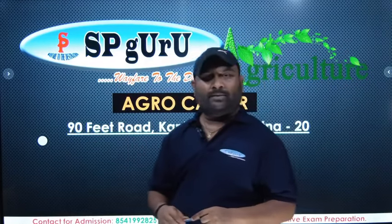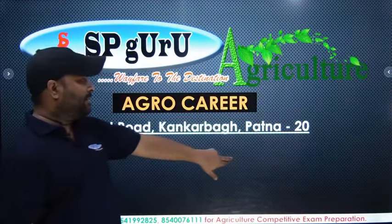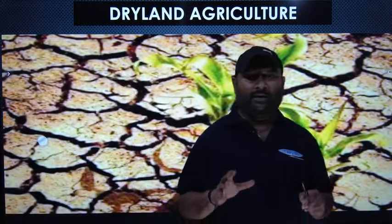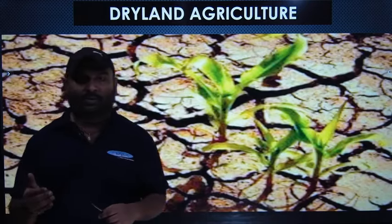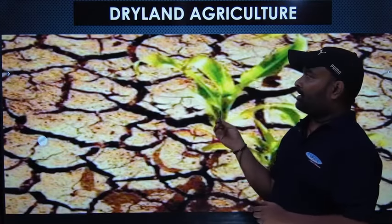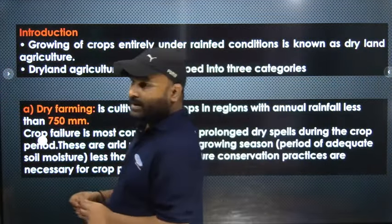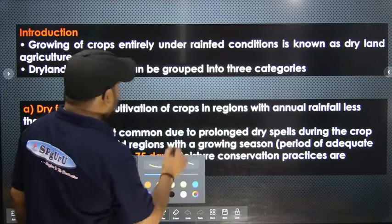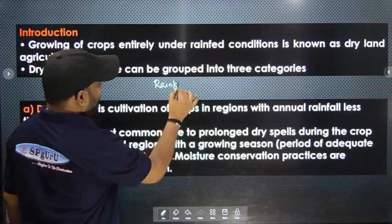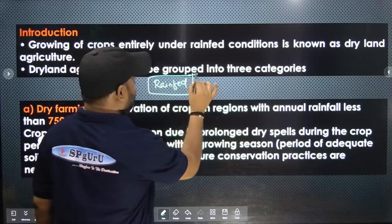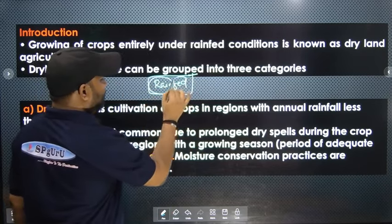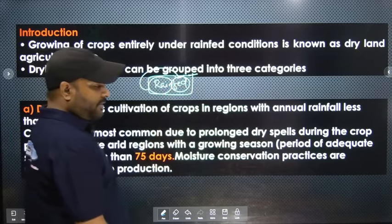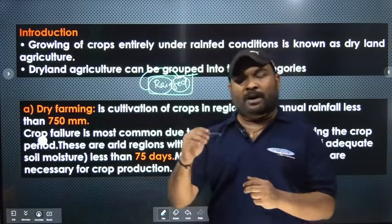Let's start today's lecture. Our topic is dryland agriculture. We will know what dryland agriculture is, and we will discuss the problems in crop production. Rain-fed means rainfall-dependent — 'baris' means rain and 'fed' means dependent — so rain-fed agriculture means agriculture that is dependent on rainfall.